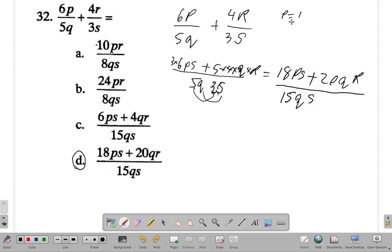Suppose you make p equal 1, q equal 2, r equal 3, s equal 4. The top here would be 6 times 1 over 5 times 2 plus 4 times 3 over 3 times 4. That would be 6 over 10 plus 12 over 12. This works out nicely.